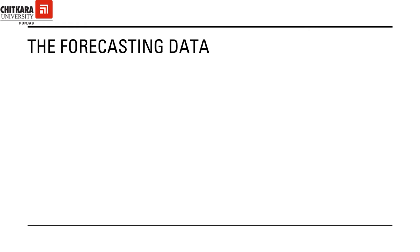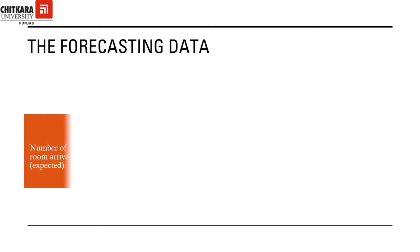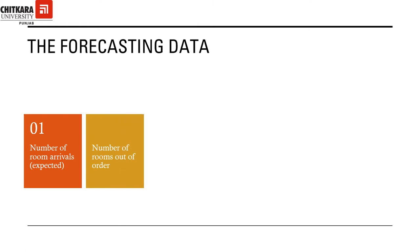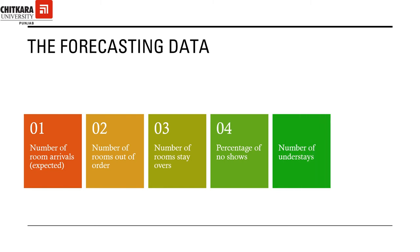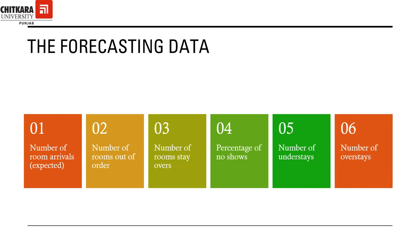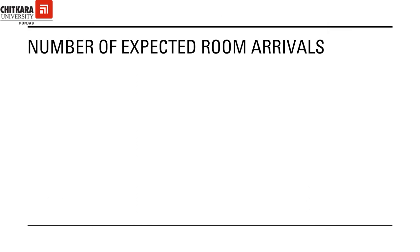Forecasting is not intuition. As mentioned earlier, it depends on historical data. So we require some data from operations from previous years to forecast future trends. Let's see what that data would be. We would require: the total number of room arrivals or reservations expected for the particular day, the number of rooms out of order, the stay-overs, the number of no-shows for the particular day, the number of understays, and the number of overstays. Let's discuss the data one by one.